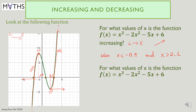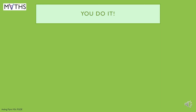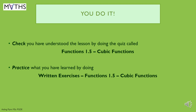For what values of x is the function decreasing? Between the two turning points the function is falling as you go from left to right. That is just one section of the graph, giving one answer: the function is decreasing when −0.9 < x < 2.1. Now it's time for you to try some questions with your quiz and written exercises.